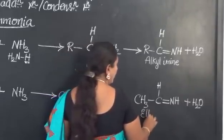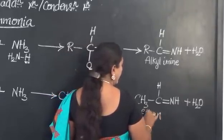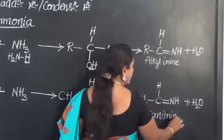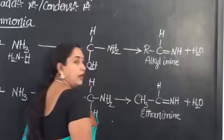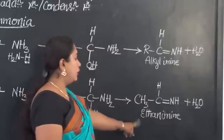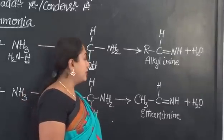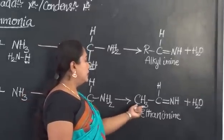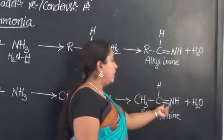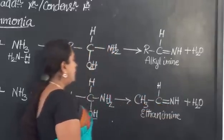So, therefore, the compound name or the product obtained is ethanimine. Ethanimine. This is the correct IUPAC name of this particular compound having the formula CH3CH double bond NH.